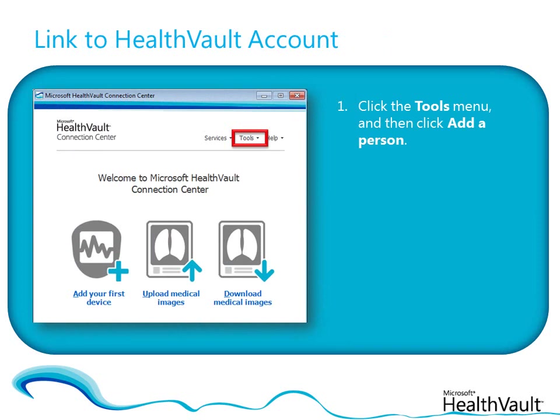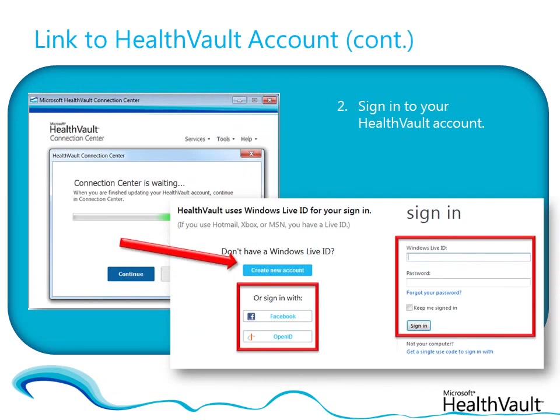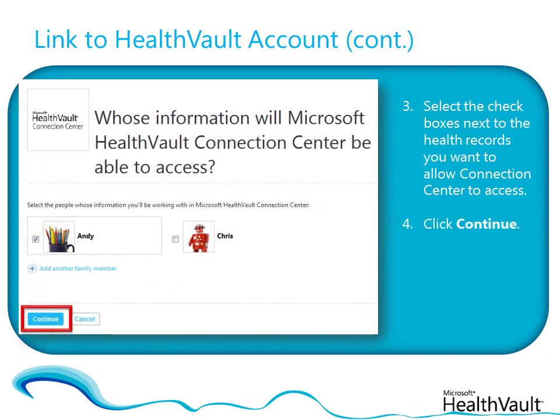On the Tools menu, click Add a Person. If you aren't already signed in to your HealthVault account, sign in with your Windows Live ID, Facebook account or OpenID. When HealthVault asks you whose information you want to grant access to, select the checkboxes next to the existing health records you want to allow the program to access, or click Add another family member to create a brand new HealthVault record, and then click Continue.